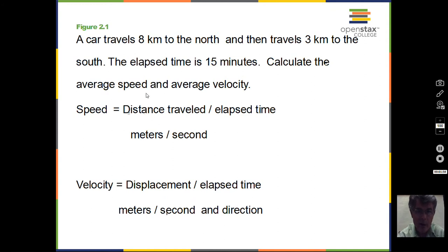Suppose we have a car going eight kilometers to the north, and then that car travels three kilometers to the south. All this happens in 15 minutes. What is the average speed? What's the average velocity? Again, speed is distance traveled divided by elapsed time. Velocity is displacement divided by elapsed time. So you should pause the video and do this calculation.